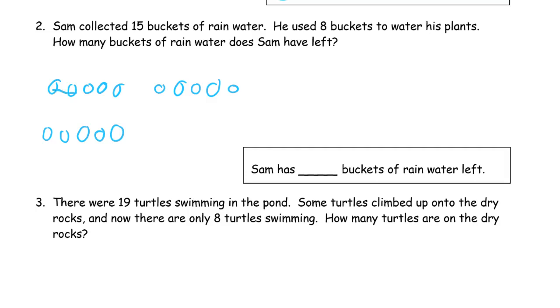So cross out 8. There's 2 left. And these 5 from the ones place. It's 2 plus 5 equals 7. Sam has 7 buckets of rainwater left.